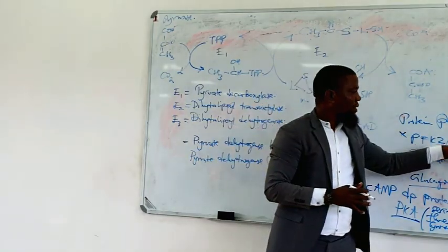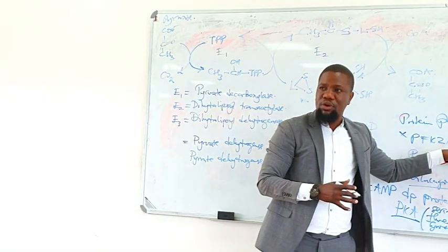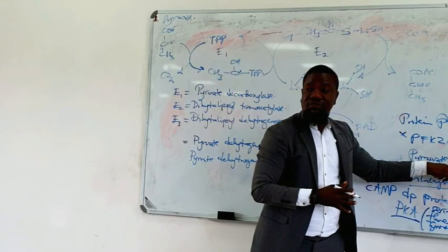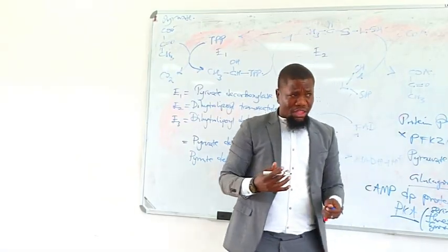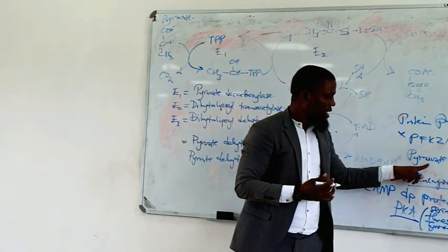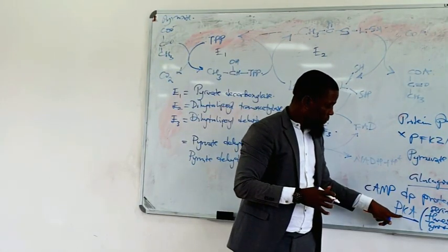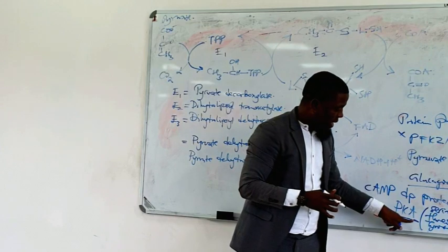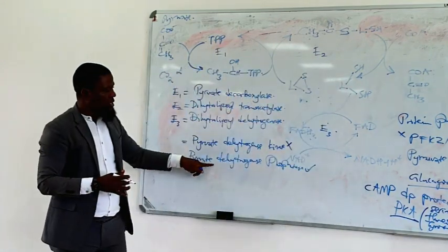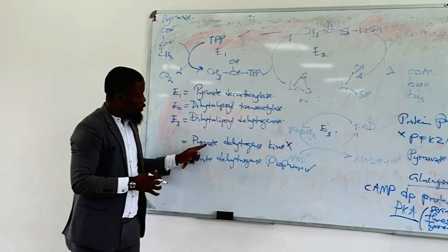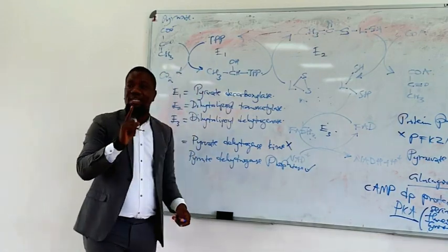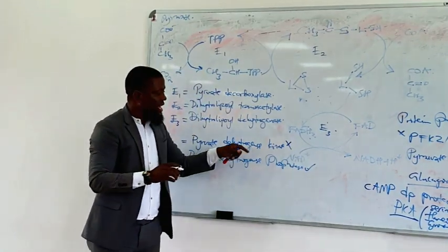The result is that this enzyme will break down fructose 2,6-bisphosphate into fructose 6-phosphate, reducing its inhibitory effect on phosphofructokinase 1 and its stimulatory effect on fructose 1,6-bisphosphatase. The result is that gluconeogenesis will be more predominant. When pyruvate kinase has been phosphorylated it will be inactive, reducing pyruvate production. At the same time, PKA will also phosphorylate the kinase and phosphatase of the pyruvate dehydrogenase complex.